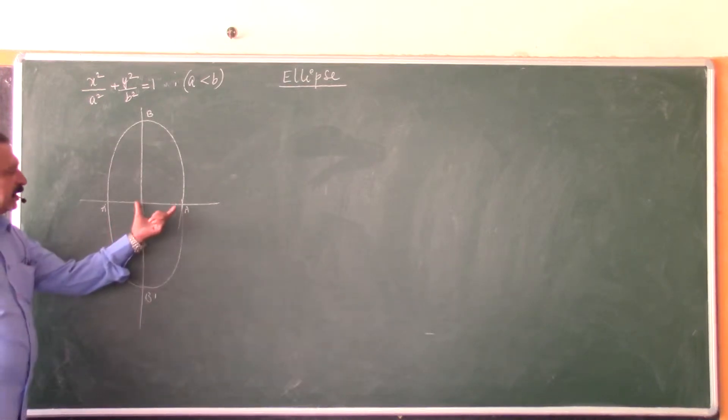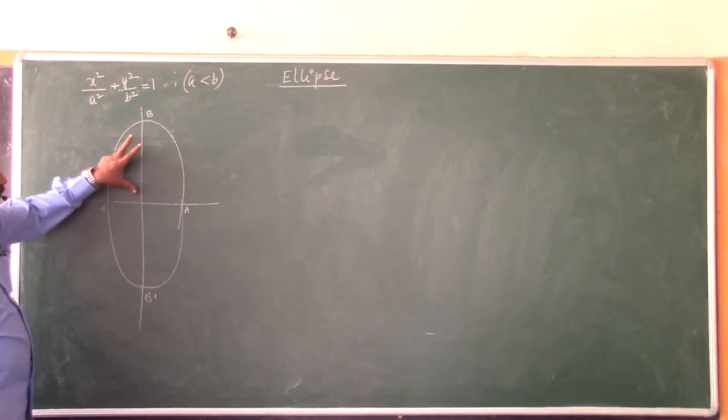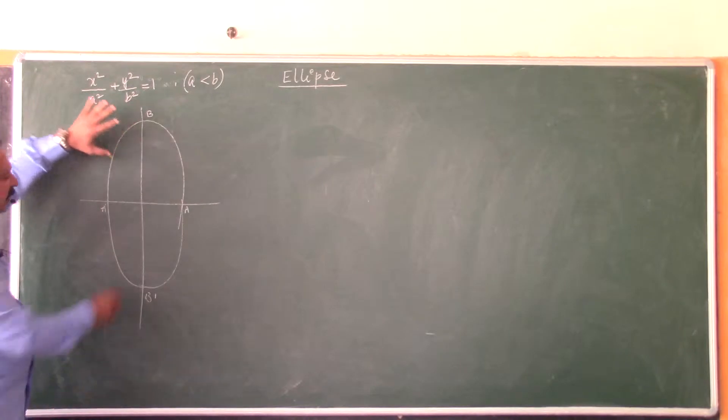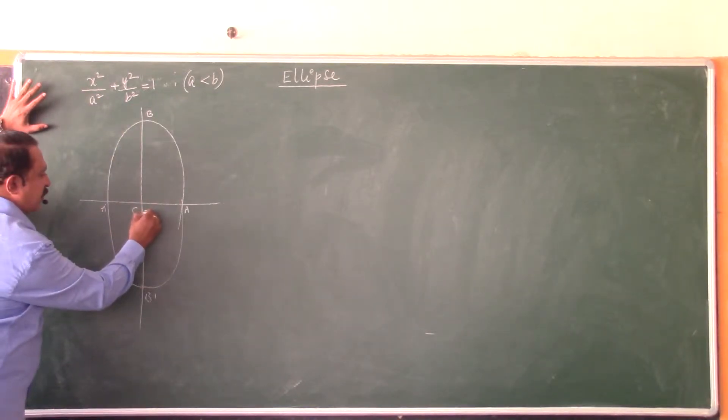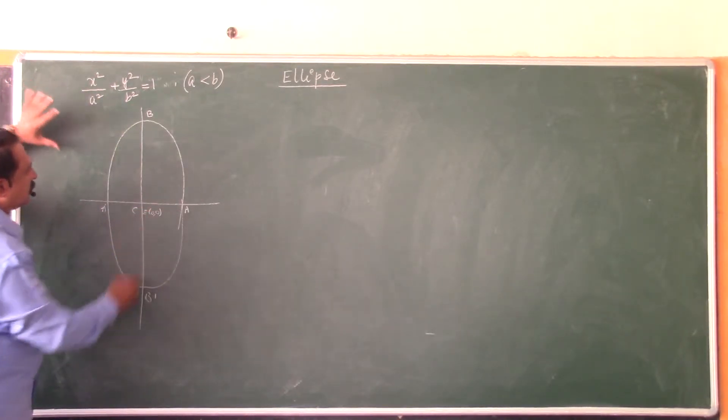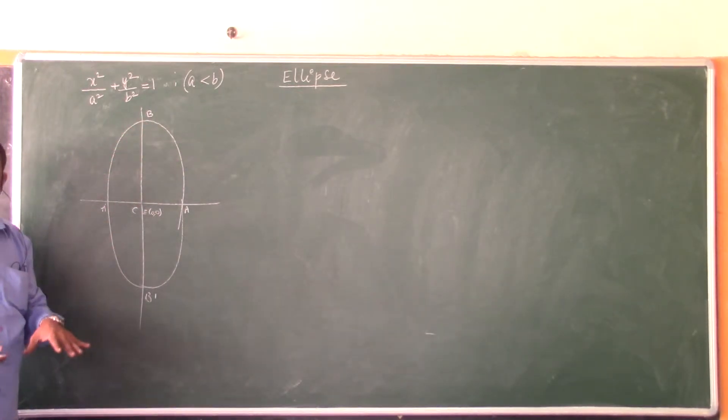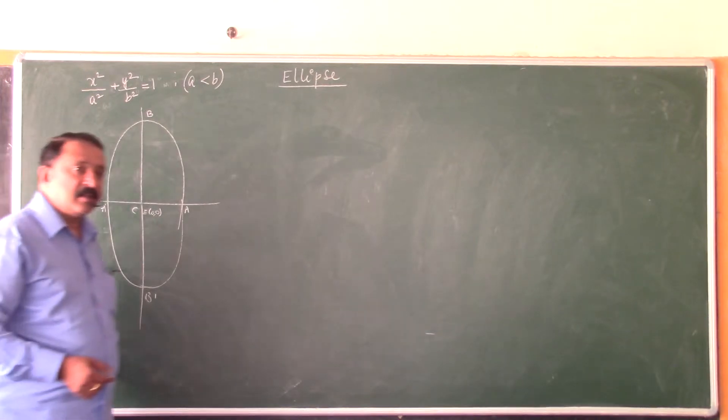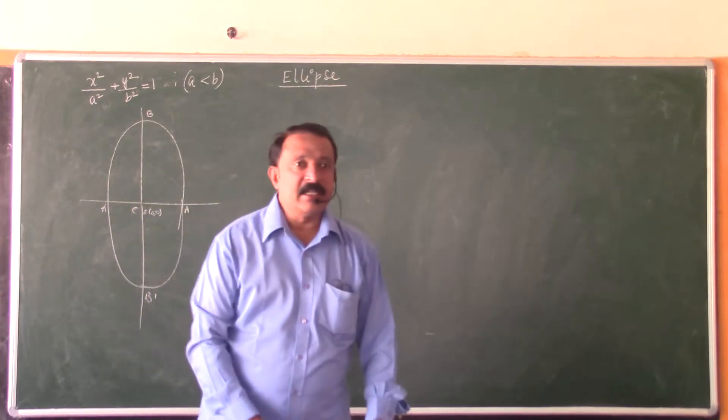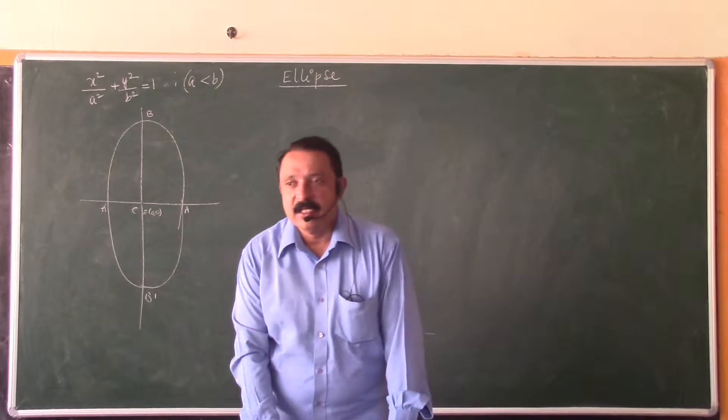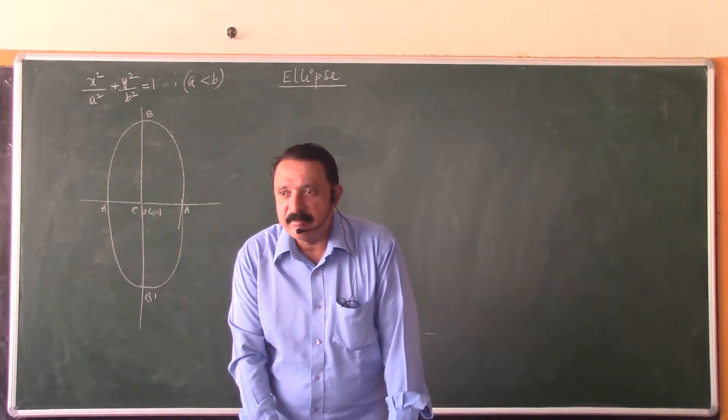Can you see that a is less than b? This is b, center. Center remains the same, 0,0. Now ca is the value of a, cb is the value of b. Which is appearing bigger, a or b? b is bigger than a. Therefore a is less than b.